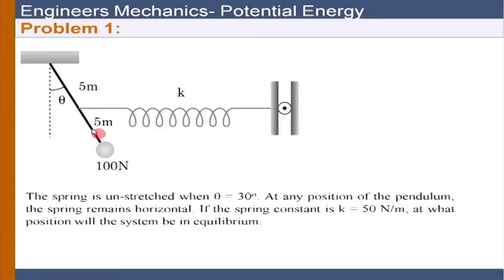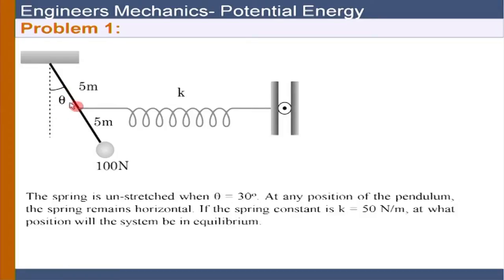We are neglecting the weight of the bar, which is able to rotate about a fixed point. The spring is unstretched at theta equals 30 degrees. When we put the weight, the bar is going to reconfigure its position to some angle theta. Our question is: what value of theta will give the equilibrium configuration?